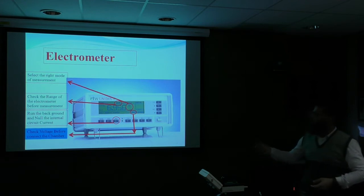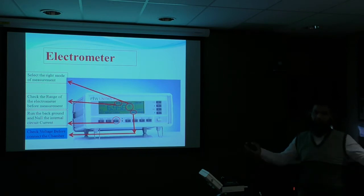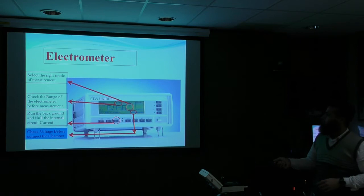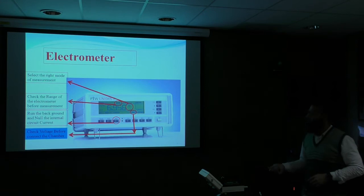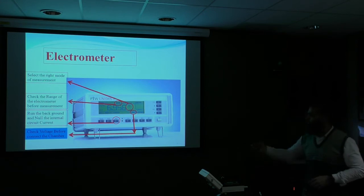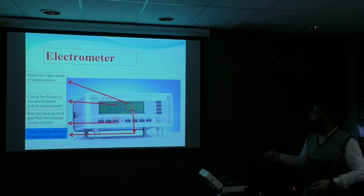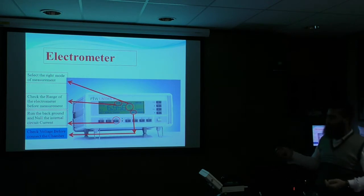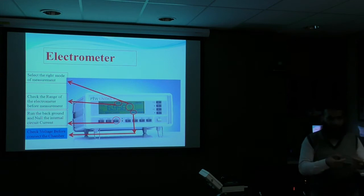The second step is to run backgrounds, to make all the current in the circuitry leak out and make it null. Then, one of the most critical things that people don't bother with enough - and they damage most diodes because of this - is not checking the voltages. The voltage for a diode should be 0. Make sure it's 0. And when you connect your chamber, this should also be 0.